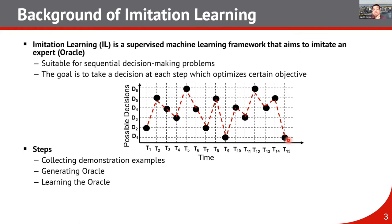Imitation learning is very good for decision making problems where there is an end objective to be optimized — it can be minimizing latency, maximizing energy efficiency, or anything else. There are multiple steps involved: first, collect demonstration examples; second, generate the oracle; and third, learn the oracle. I will give you details of each step.